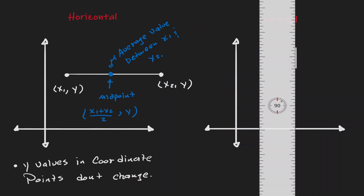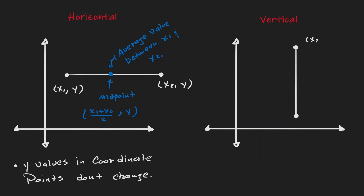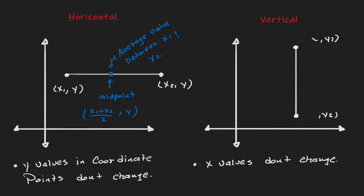Now let's consider a vertical line. Let's call the above point x1, y1 and let's call the below point x2, y2. One thing to notice is that in a vertical line the x values don't change. So instead of calling this x1 and x2, let's just call them both x. Now to define the midpoint, at least we know that the x value is not going to change. But the y component is the average of y1 and y2 — that is, y1 plus y2 divided by 2.